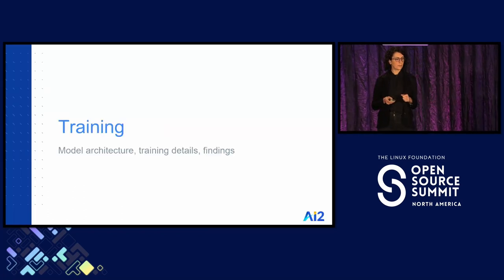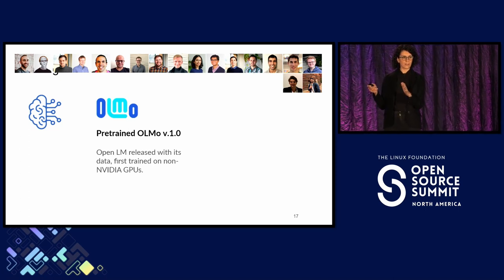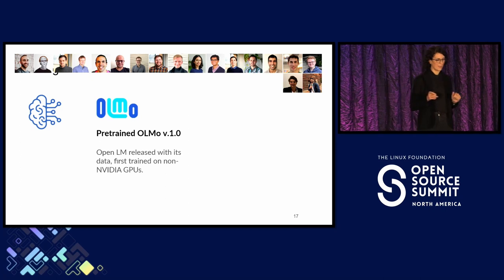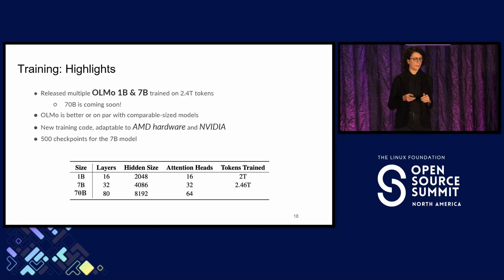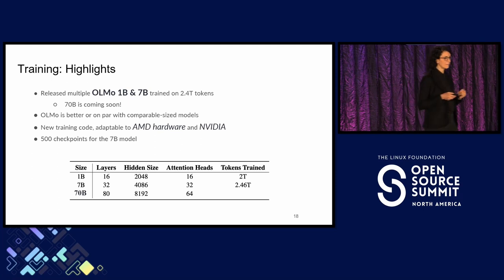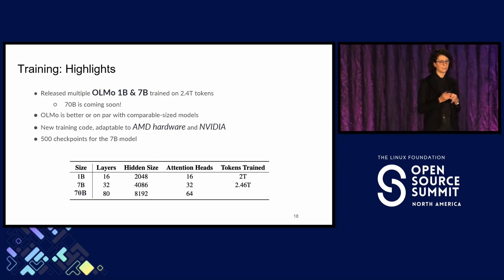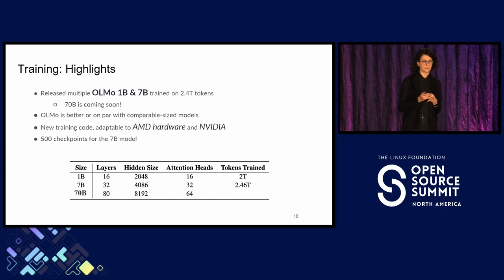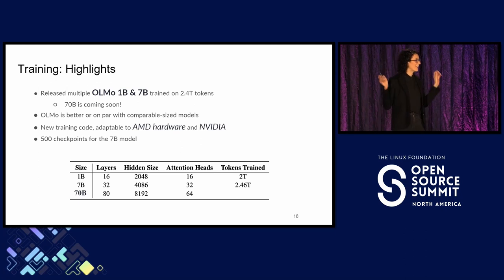Next step is training. Through this step, we took our data, used a transformer architecture with some details we have shared, and built the OLMo model. In particular, we have so far released OLMo at 1 billion and 7 billion parameter scale. The 70 billion parameter model is currently training — it is slow, as I mentioned, and requires a lot of GPU compute.